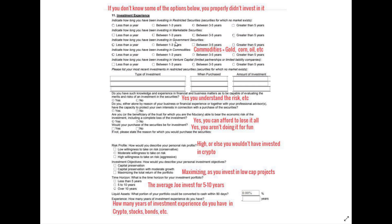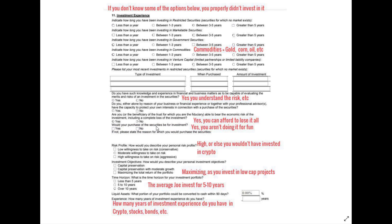For investment experience, if there's something you don't recognize, you probably haven't invested in it — but remember some of you also have a pension invested through EvenToACapital. Click the appropriate range: less than a year, one to two years, three years, and so on. Commodities means gold, corn, oil, and similar. Then it asks whether you have sufficient knowledge and experience in financial and business matters to evaluate the merits and risks of investing in securities — answer yes. Yes, you understand the risk and can afford to lose it. And yes, your purchase of securities is for investment purposes.